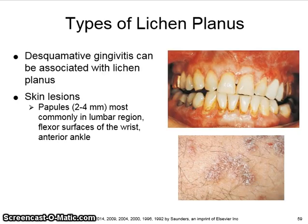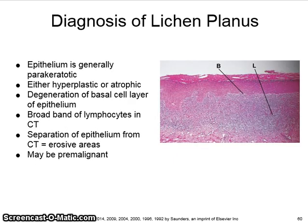Desquamative gingivitis can be associated with lichen planus. The skin lesions are papules two to four millimeters in size, most commonly in the lumbar region, the flexor surfaces of the wrists, and the anterior of the ankle. The diagnosis of lichen planus is usually microscopic. The epithelium is generally parakeratotic, either hyperplastic or atrophic. A degeneration of the basal cell layer of the epithelium is seen, and a broad band of lymphocytes is seen in the connective tissue.